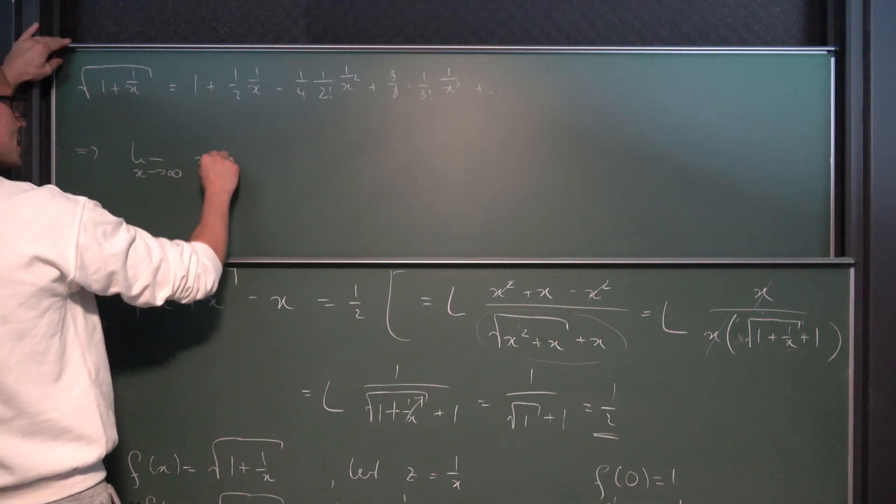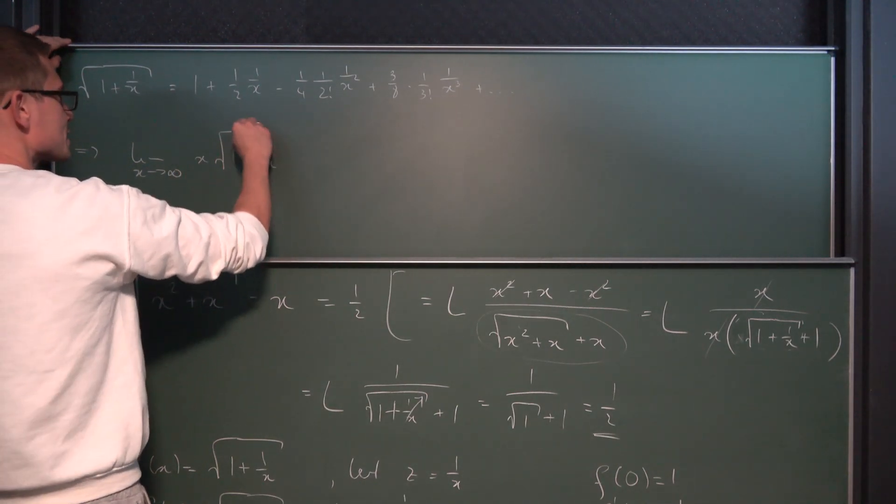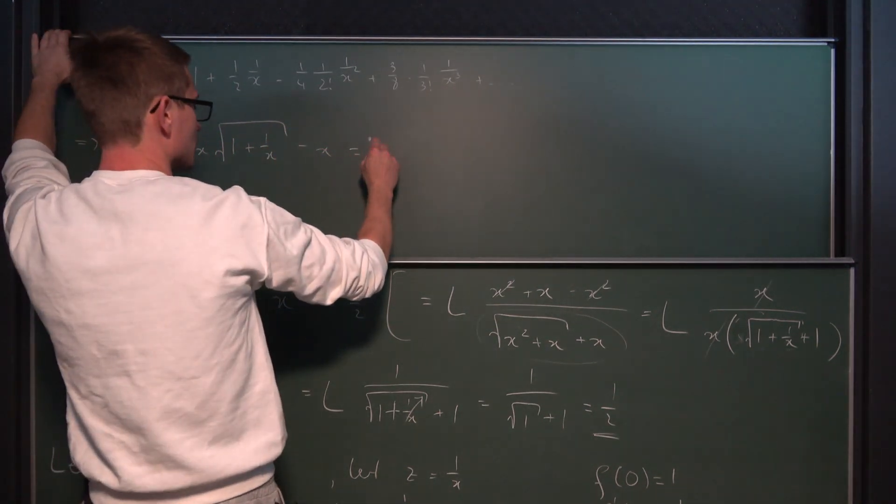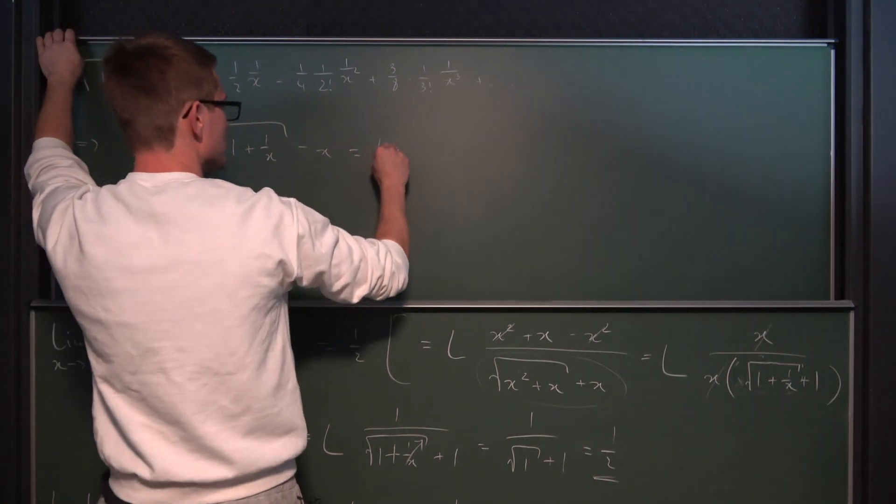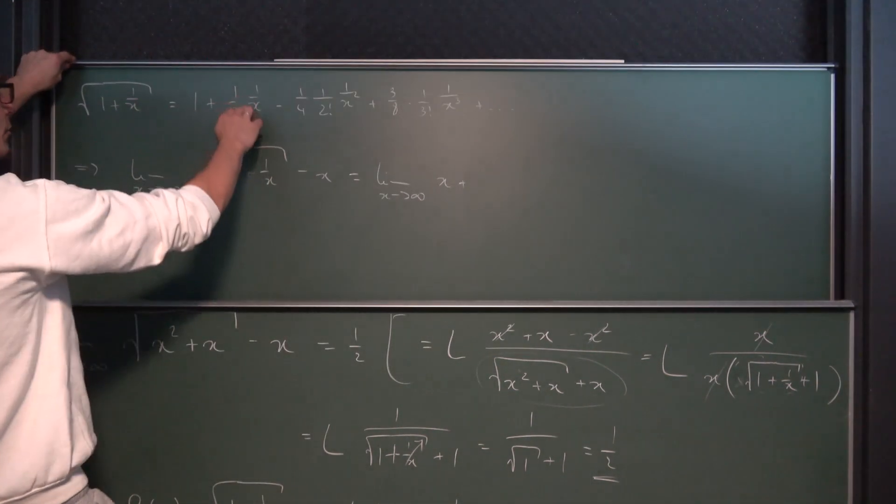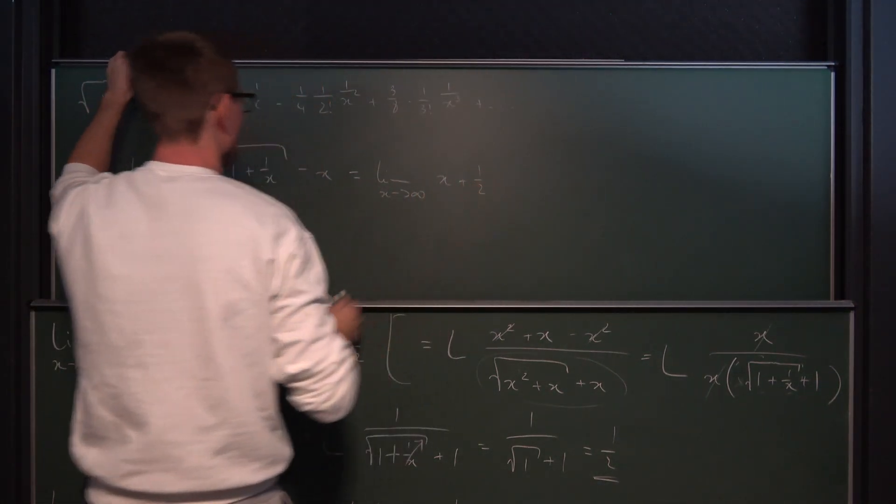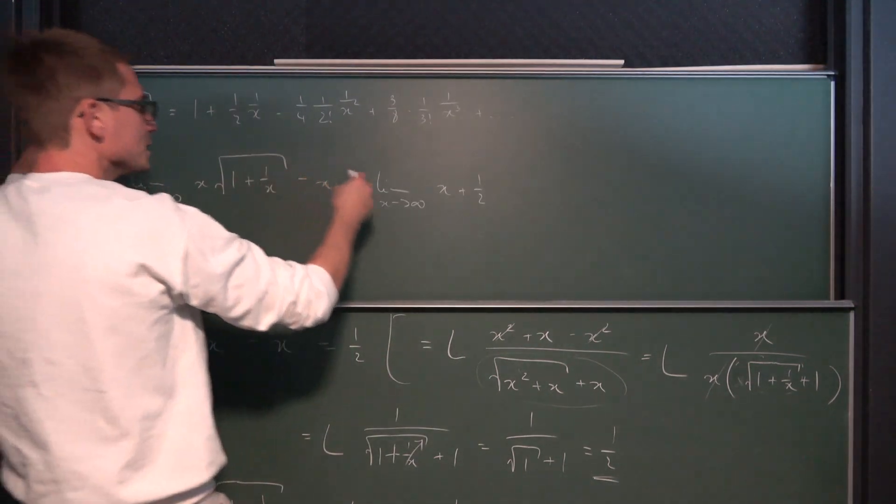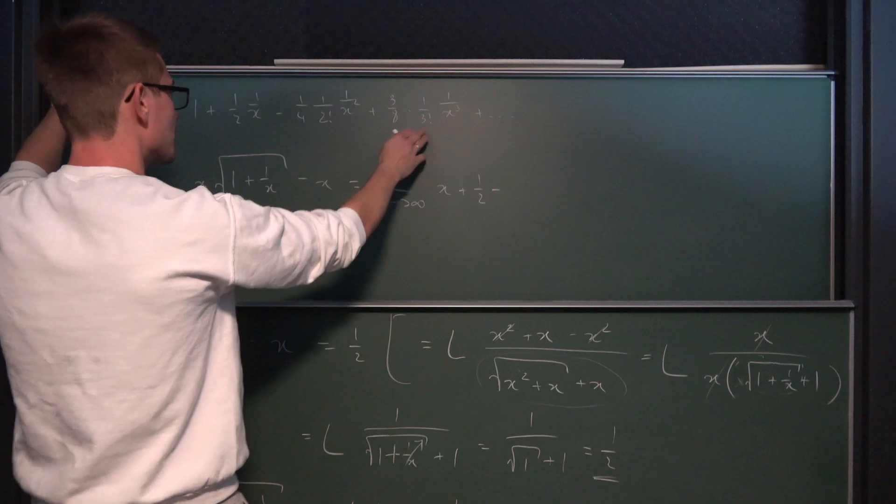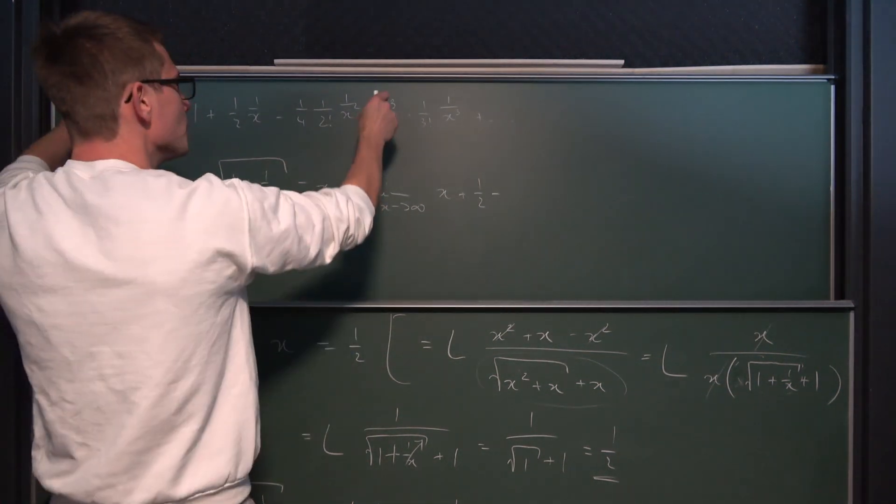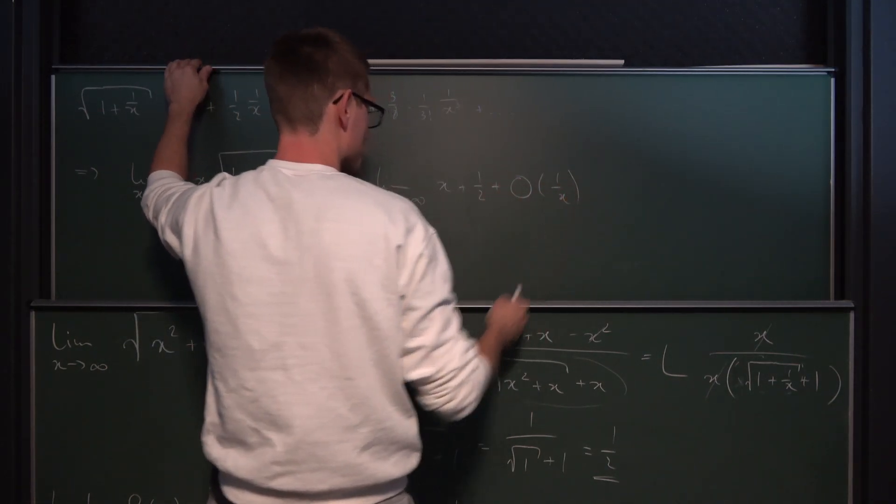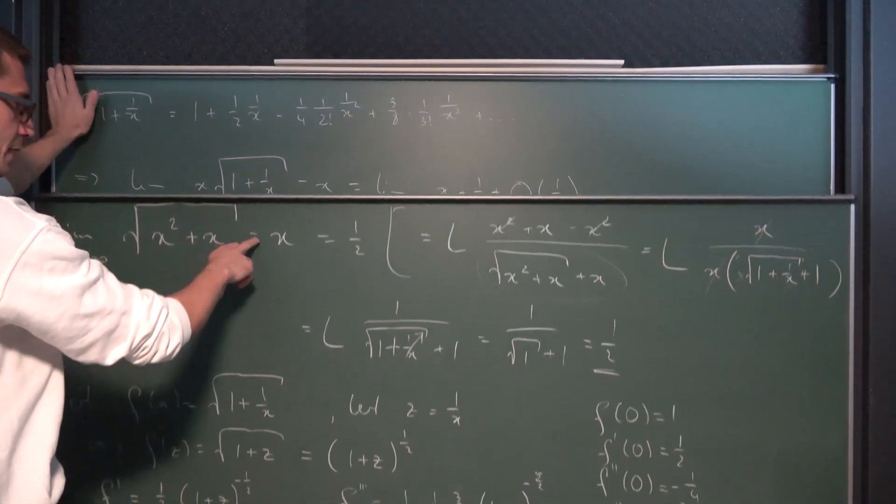Then we're going to get x times the square root of one plus one over x minus x is the same as, due to our whole series expansion, we are going to get multiplying the x in the limit as x approaches infinity of x plus one half. And one over x, this is going to simplify to one half. And then we are going to get minus some constant times and we are going to get on each and every term some kind of power of one over x. Plus one over x most definitely. And we still have our negative x here.